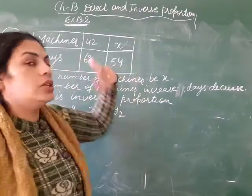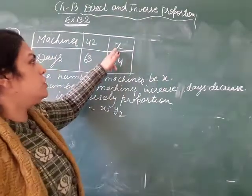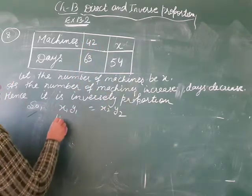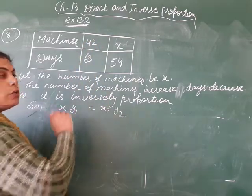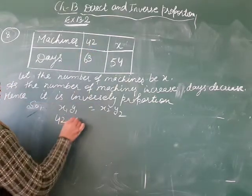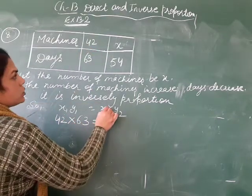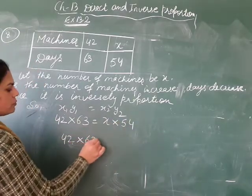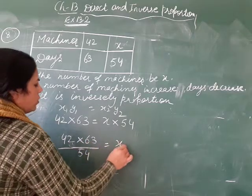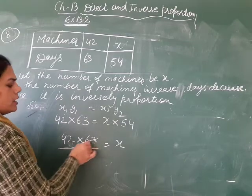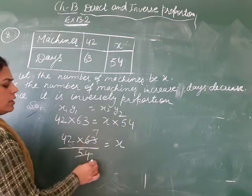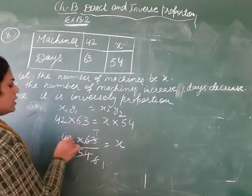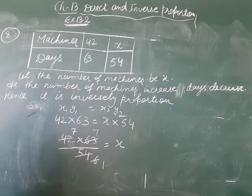You have to finish your work in 54 days. Let machines = x. It is inversely proportional: x1 × y1 = x2 × y2. x1 = 42, y1 = 63, x2 = x, y2 = 54. So 42 × 63 = x × 54. Divide: x = (42 × 63) / 54. Now simplifying: 9 × 7 = 63, 9 × 6 = 54, 6 × 7 = 42.